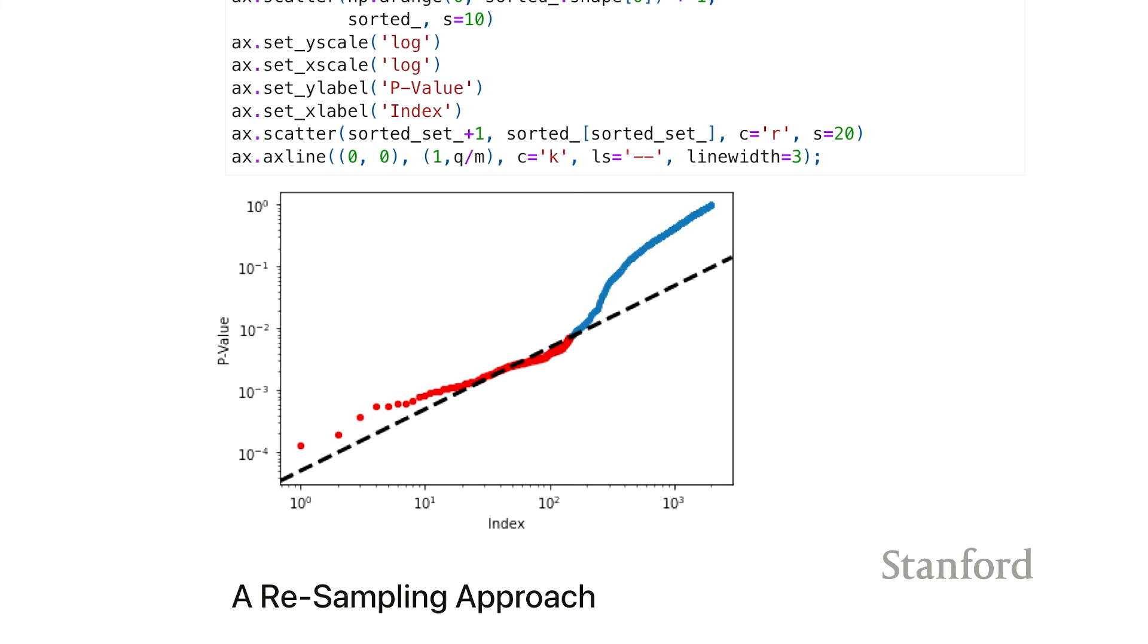The way the procedure is done is it finds the largest j, that is the most liberal threshold, the last time that p_j is less than or equal to alpha j over m. You can see here, these are the p-values, and this is the last time this curve is below this dashed line. So this marks the Benjamini-Hochberg threshold, and it rejects everything to the left. And you see it actually included some of these p-values that, to start off, didn't seem to get under that line.